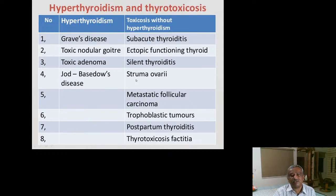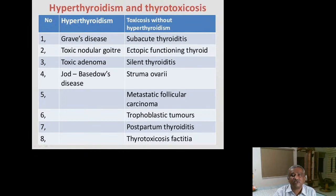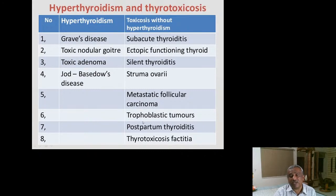Thyrotoxicosis without hyperthyroidism includes: thyrotoxicosis factitia (e.g., someone taking thyroid hormone supplements for weight loss), subacute thyroiditis (transient, not long-standing), ectopic functioning thyroid, silent thyroiditis, struma ovarii, metastatic follicular carcinoma, trophoblastic tumours, and postpartum thyroiditis. Whenever production is from ectopic foci or is transient, it is toxicosis without hyperthyroidism. This distinction is important — misdiagnosing postpartum thyroiditis as hyperthyroidism and treating it can lead to gross hypothyroidism very rapidly.